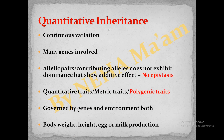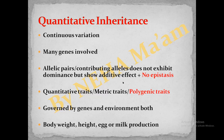Now we will discuss quantitative inheritance — the inheritance of quantitative traits or polygenic traits. This shows continuous variation, meaning there would be a gradation of phenotypic expression in the F2 progeny. There is involvement of more than one gene having different alleles. The allelic pairs, also known as contributing alleles, do not exhibit dominance as in qualitative inheritance, but can show an additive effect. If a single dominant allele affects a particular trait, then an individual with more dominant alleles would show higher phenotypic expression.